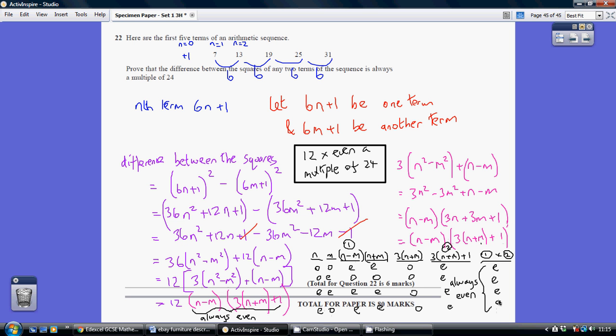So what I'm then saying is, right. So basically I've shown, I've proven that it's 12 times an even number. And 12 times an even is always a multiple of 24. Hence we've proved what we had to show.